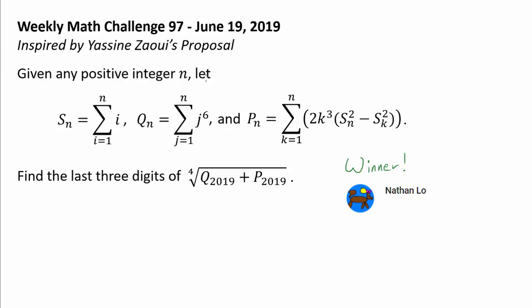Given any positive integer n, let S_n be the familiar sum from i equals 1 to n of i, and Q_n be the sum from j equals 1 to n of j to the 6th power. Frankly, I do not have the closed form of Q_n memorized. You can always derive it using, for example, Stirling's numbers of the second kind, or look it up if needed. Nevertheless, this seems very contrived — j to the 6th power is a very large power. But for now, let's finish reading the question and we will go back to Q_n.